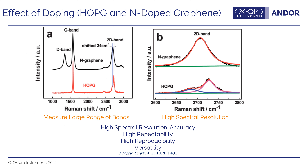Here's an example where we'd like to measure a large range of bands but also have high spectral resolution in the same setup. We're looking at highly oriented pyrolytic graphite (HOPG) and N-doped graphene. Figure A shows the Raman spectrum over about 2,000 wavenumbers — the effect of doping introduces a D-band at about 1,350 wavenumbers in N-doped graphene not seen in HOPG. There is also a 24 wavenumber shift to the red in N-doped graphene, which becomes more obvious when you zoom into that region in plot B.